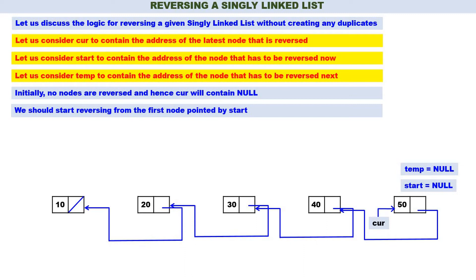If you remember the three variables — curr, start, and temp — understanding the logic of reversing a single linked list is quite simple.